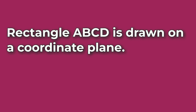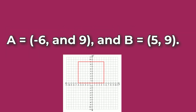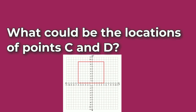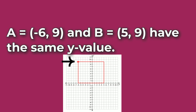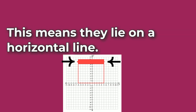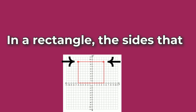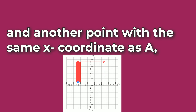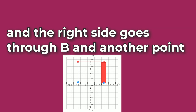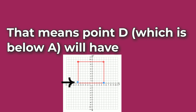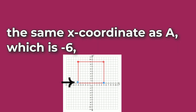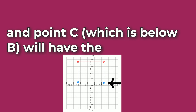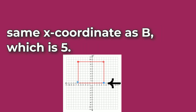Problem Number 4. Rectangle ABCD is drawn on a coordinate plane. A equals (−6, 9) and B equals (5, 9). What could be the locations of points C and D? Notice that points A and B have the same Y value, which means they lie on a horizontal line. In a rectangle, the sides that go up and down are vertical, so the left side goes through A and another point with the same X coordinate as A, and the right side goes through B and another point with the same X coordinate as B. Point D, which is below A, will have the same X coordinate as A, which is −6, and point C, which is below B, will have the same X coordinate as B, which is 5.